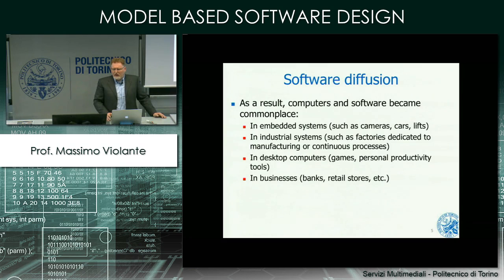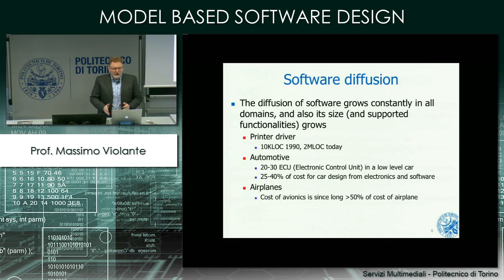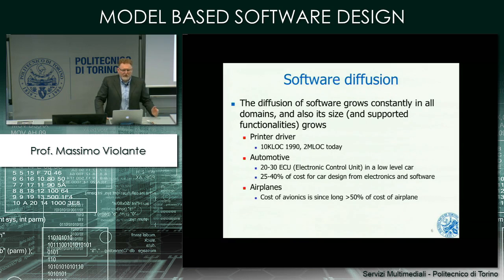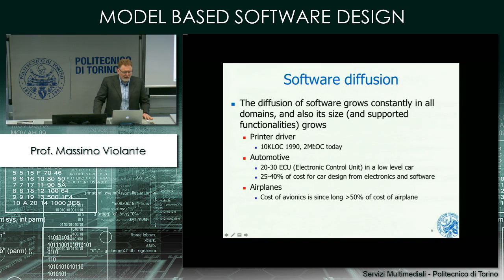With the diffusion of computers there is also a diffusion of software. Computers are dumb machines — unless there is software powering them, you can do nothing. In parallel to the growth of the computer industry there was the growth of the software industry. The more computers become powerful and available, the more we want from them. Think about a printer: in the 90s, a driver for a printer was about 10,000 lines of code. LOC stands for lines of code. Today it is about two million.